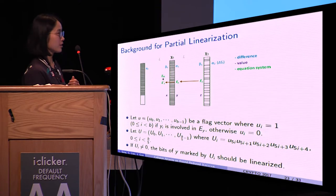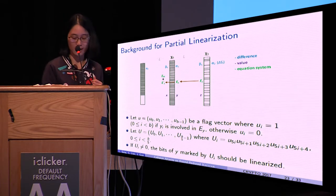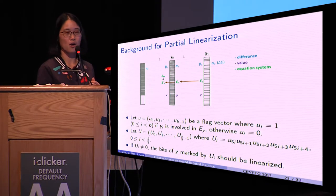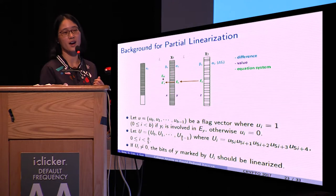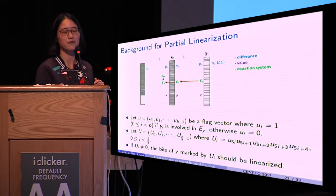Before moving on, let's introduce some notations. Let U be a flag vector where U_i is 1 if Y_i is involved in EY, otherwise U_i is 0. Let capital U be a vector of 5-bit values.